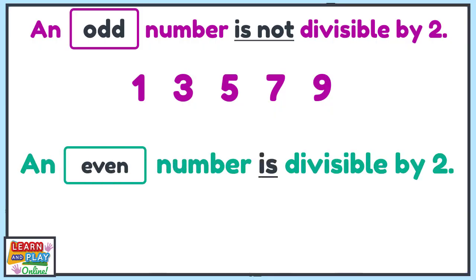Even numbers are divisible by 2 because they would produce equal groups. All even numbers include numbers that end in 0, 2, 4, 6 and 8.